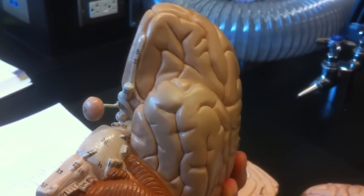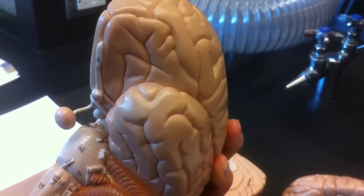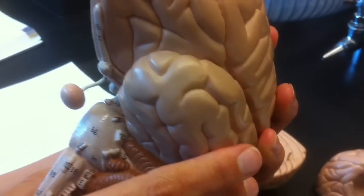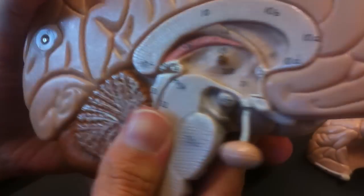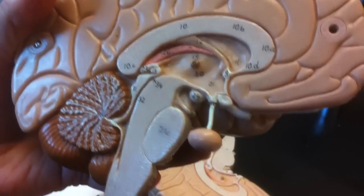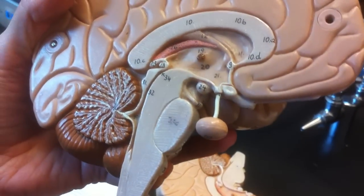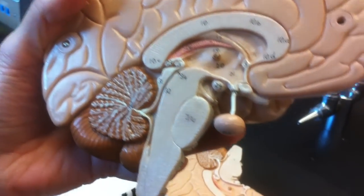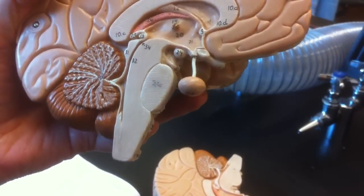Moving on to the diencephalon. Which contains the thalamus. The hypothalamus. It contains five things. Pineal, is pineal in there? Pineal gland. Those are like the three big things.